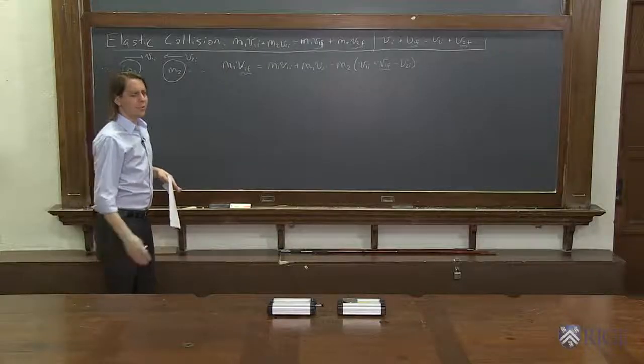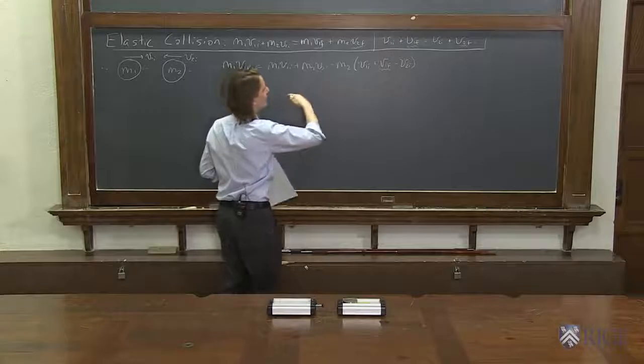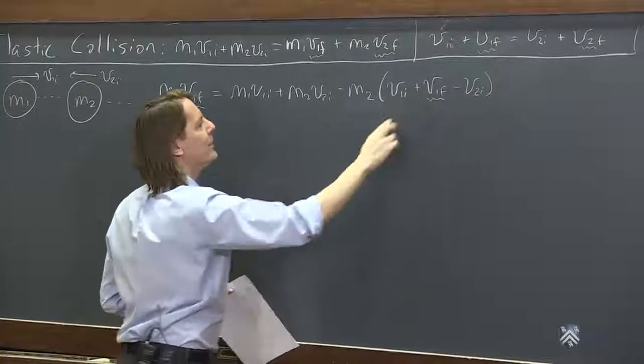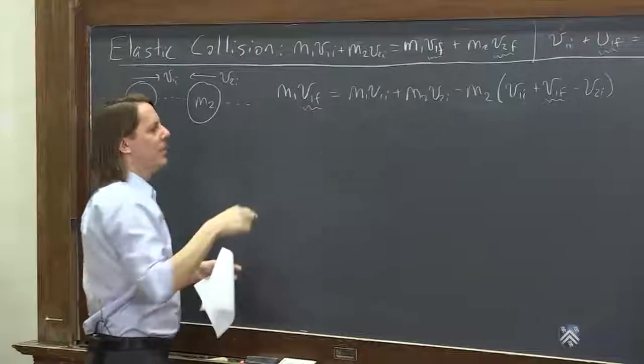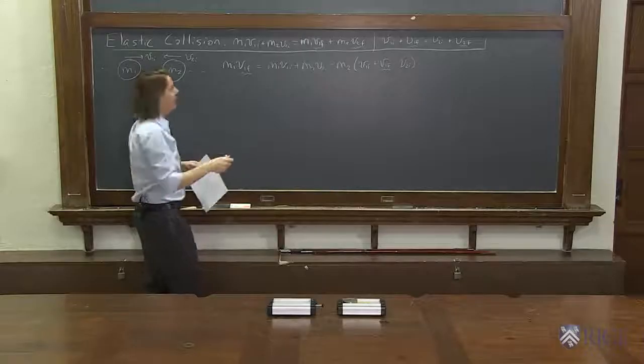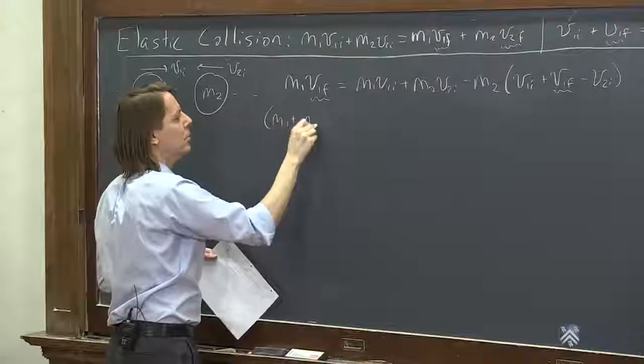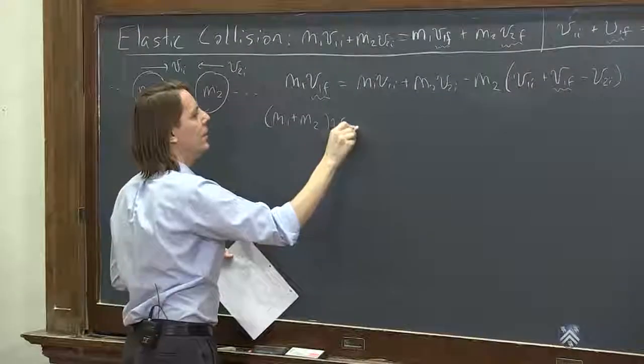And then what you want to do is we're solving for V1f, so you get them all on one side. So we have minus M2 V1f. So we bring that over here, that'll become plus M2 V1f. So we have M1 V1f plus M2 V1f. So we can go ahead and pull out the M1 plus M2 times V1f.